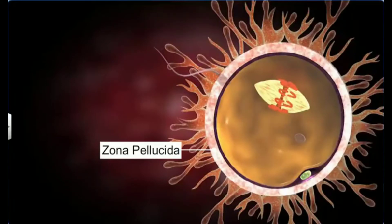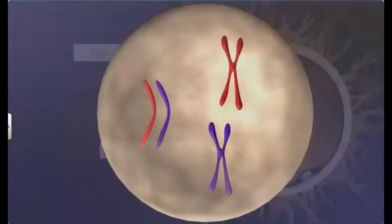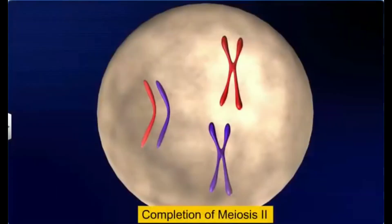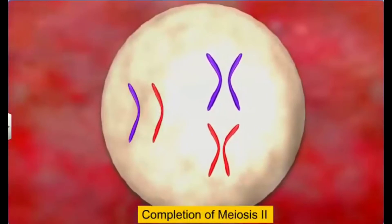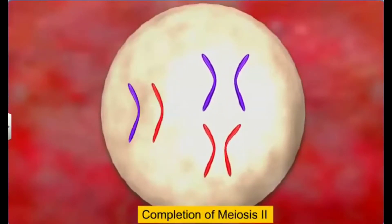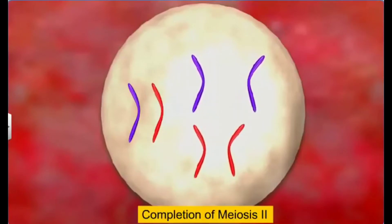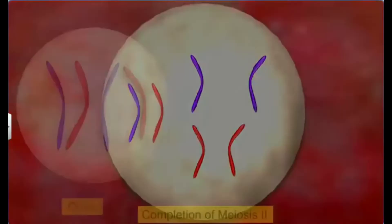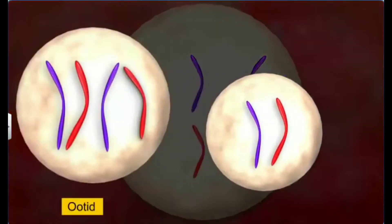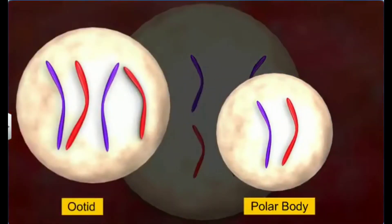After gaining entry through the zona pellucida, the acrosome present over the sperm's nucleus starts secreting enzymes that aid the sperm head to get through the ovum cytoplasm. While the sperm sheds its tail, the fertilized egg resumes the remaining phases of the second meiotic division. This division, being unequal, results in the formation of two unequal bodies: a haploid body called the ootid and a second polar body.